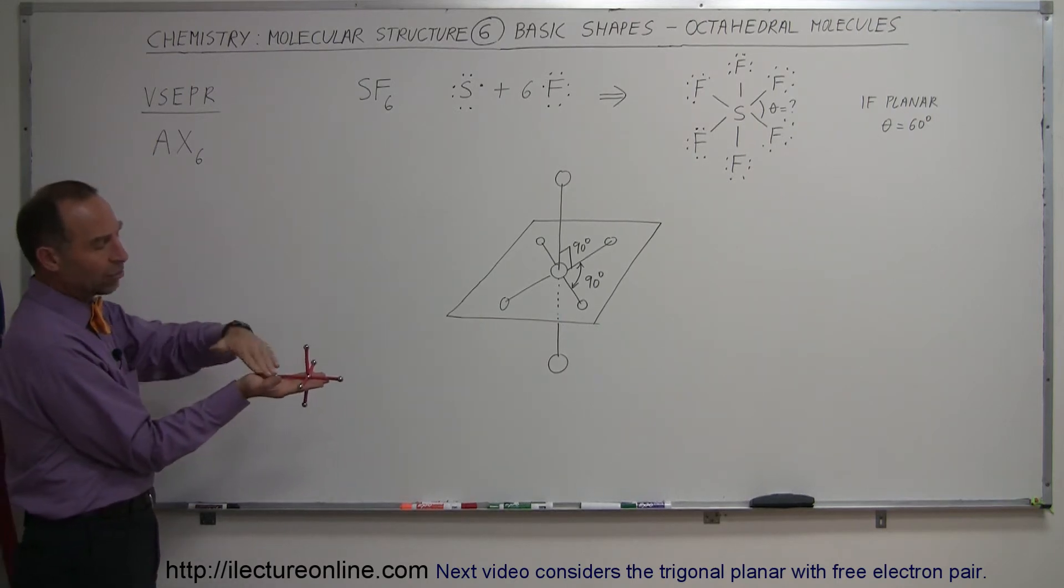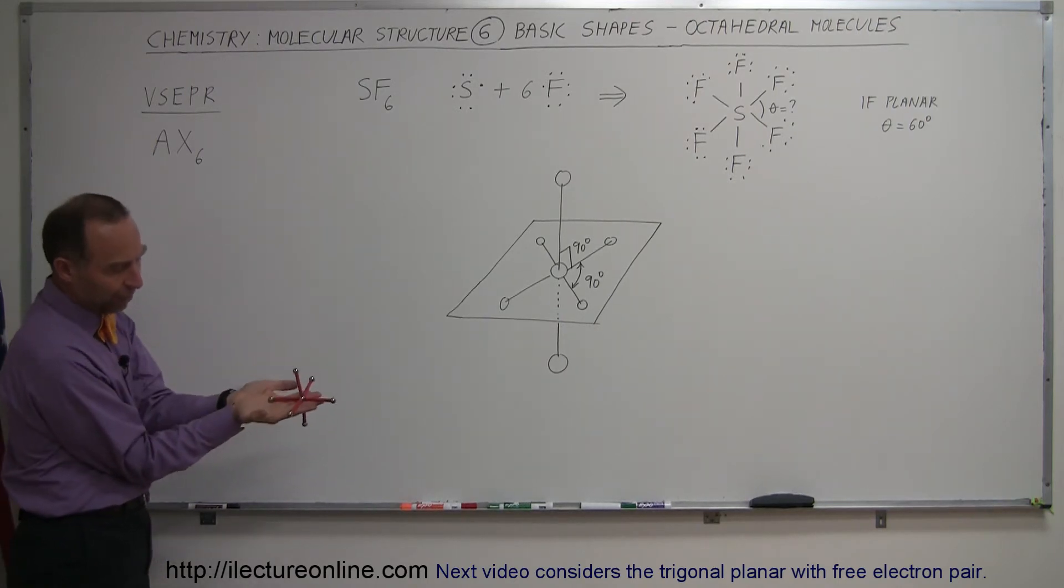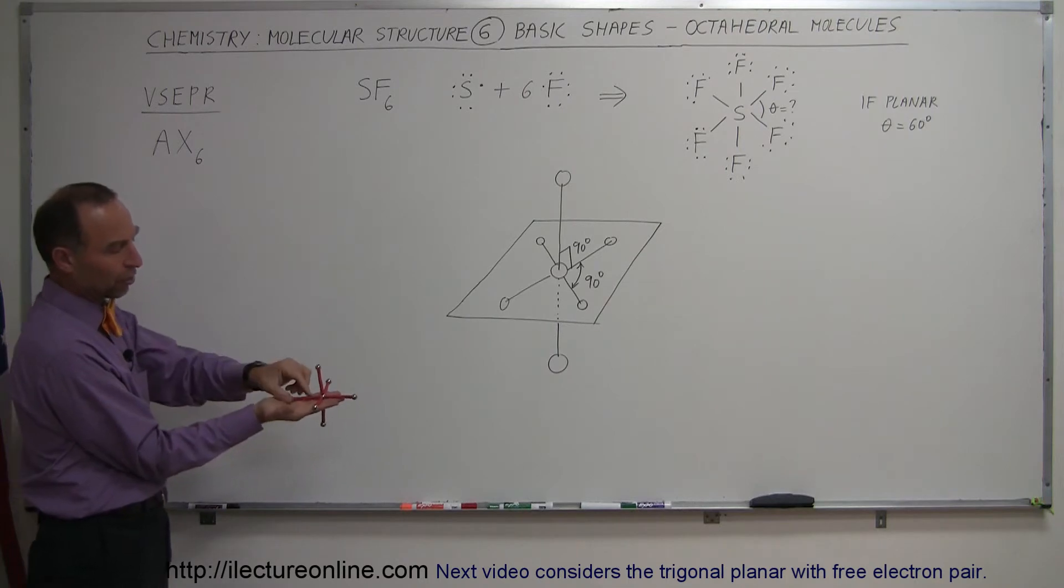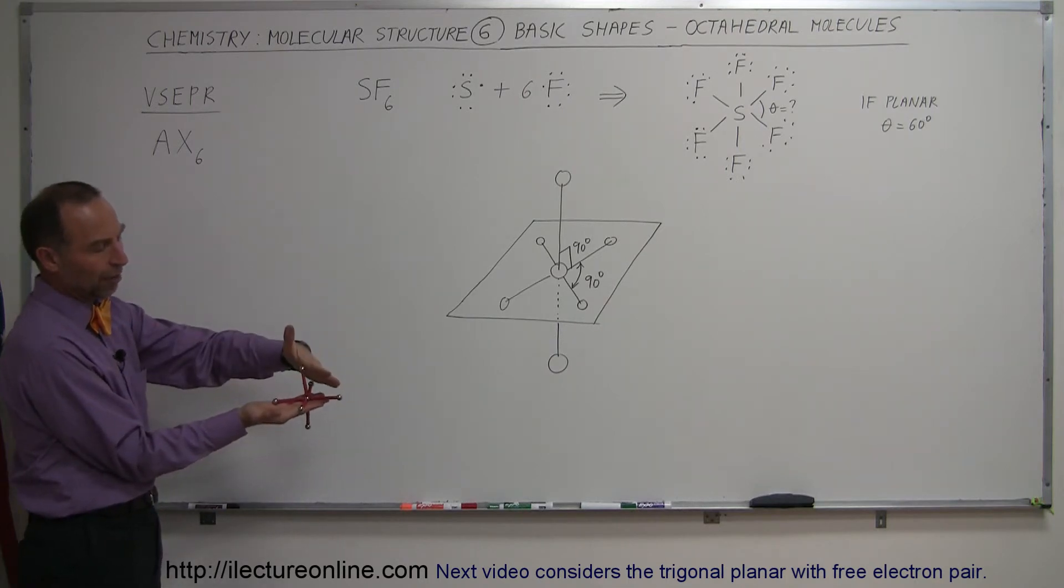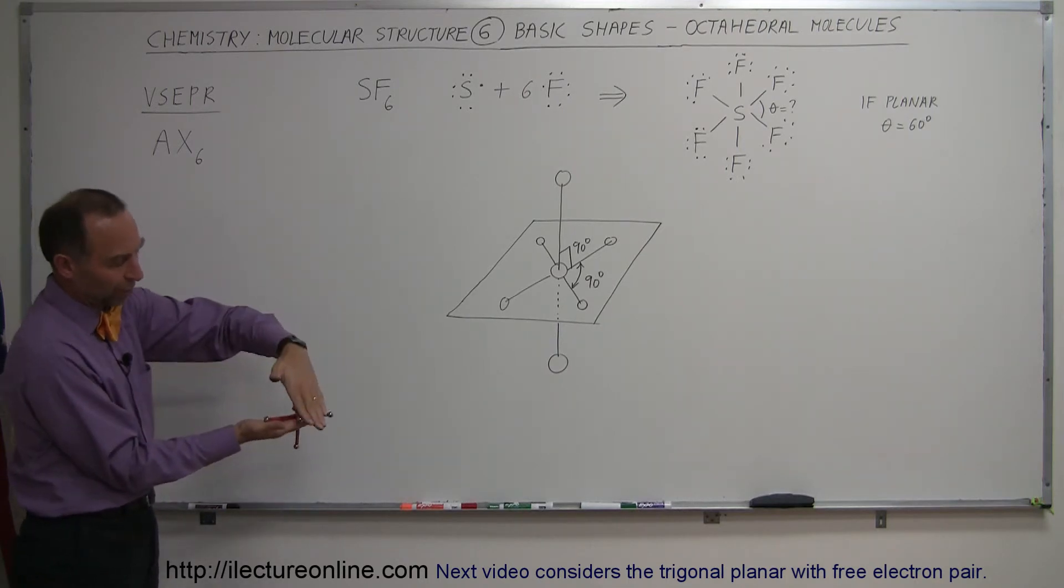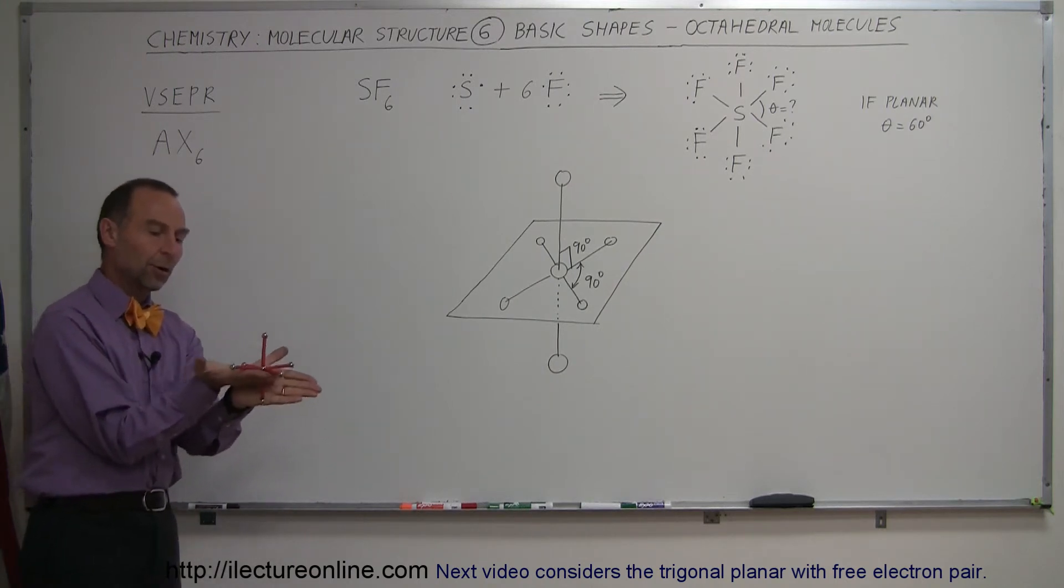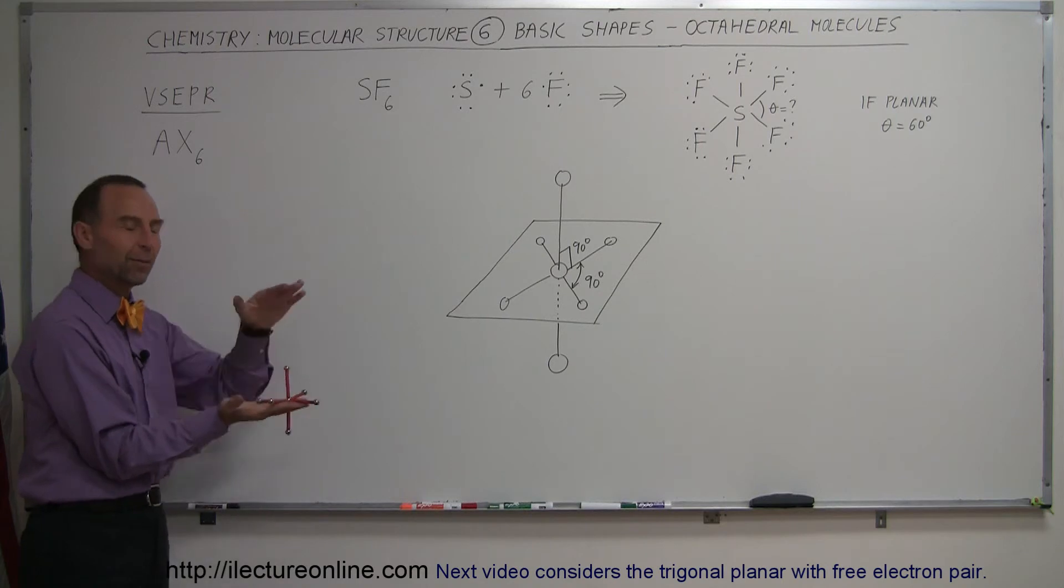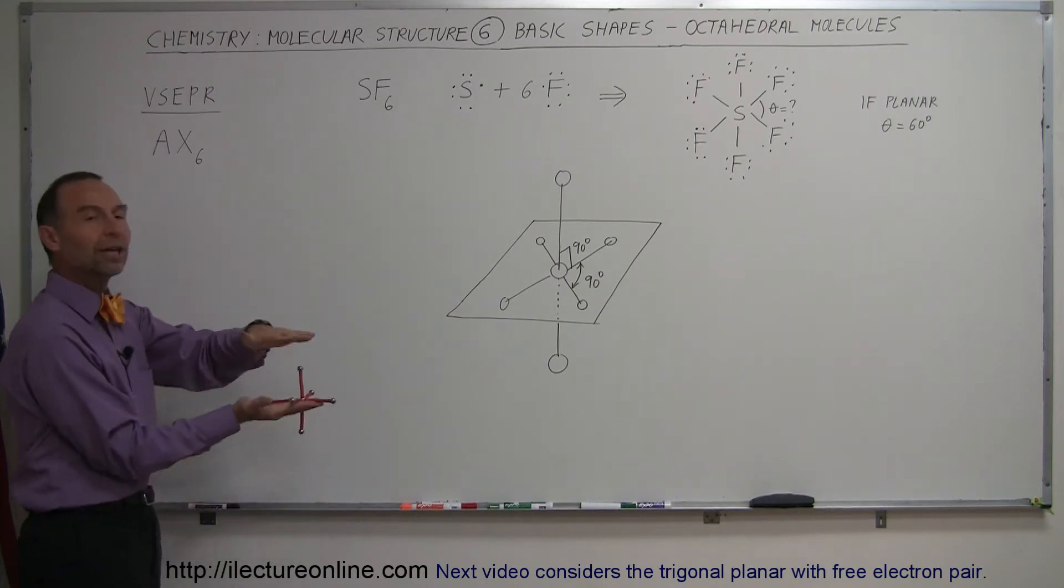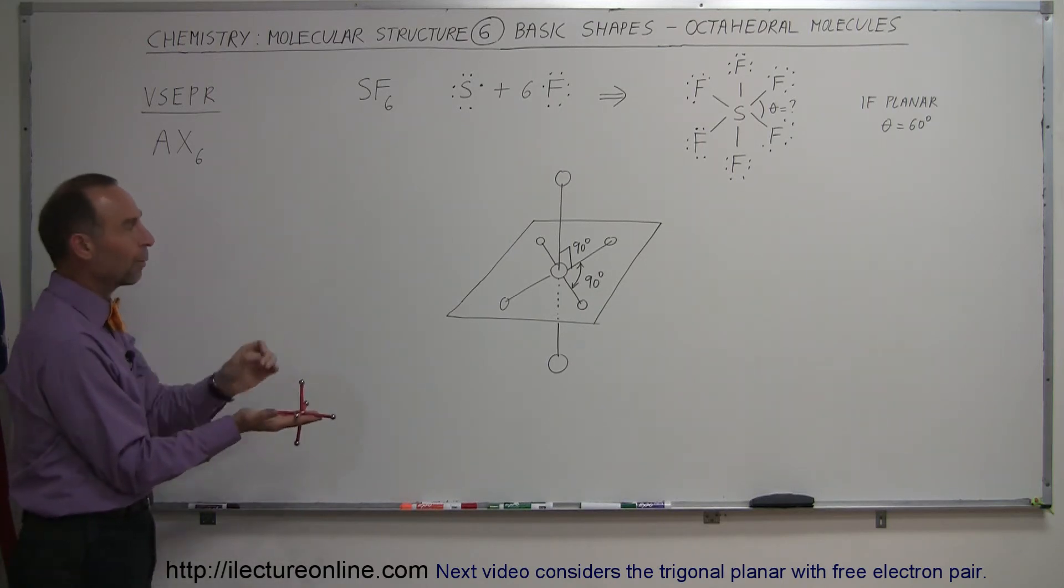And notice then that the top portion of it, the bottom is hidden by my hand here, but the top portion forms a pyramid, and it would have four sides. So just like the pyramids in Egypt, four-sided pyramids. And then, of course, at the bottom, you would also have a four-sided pyramid. So basically, two four-sided pyramids glued together at the base, pointing away from one another.